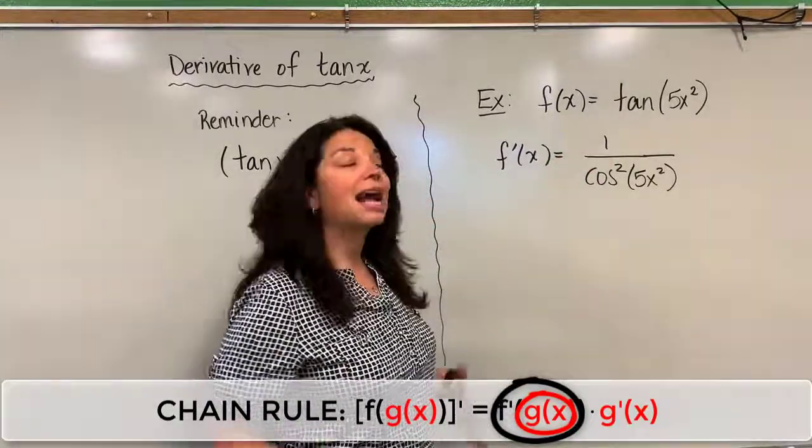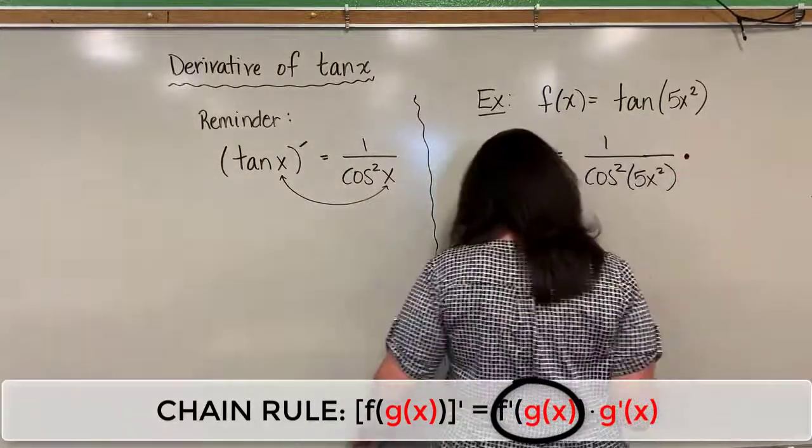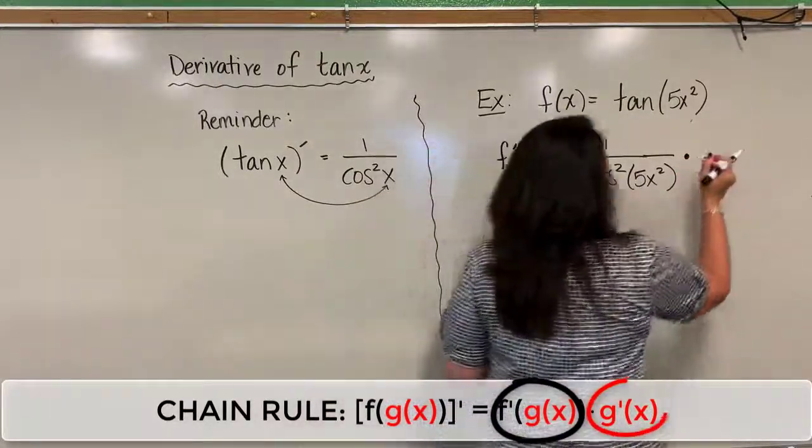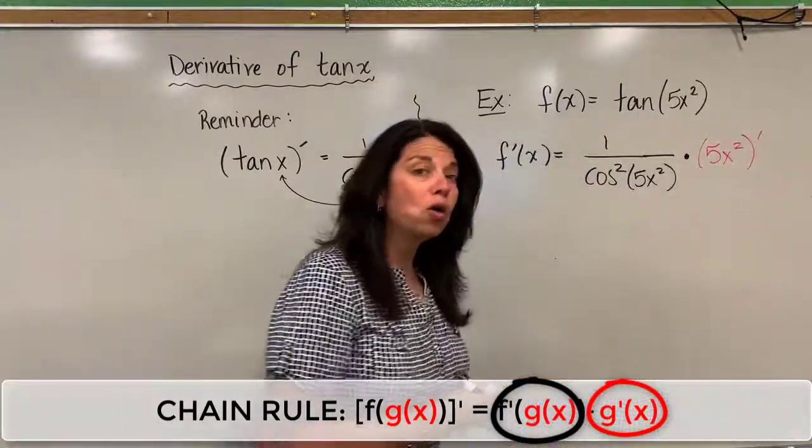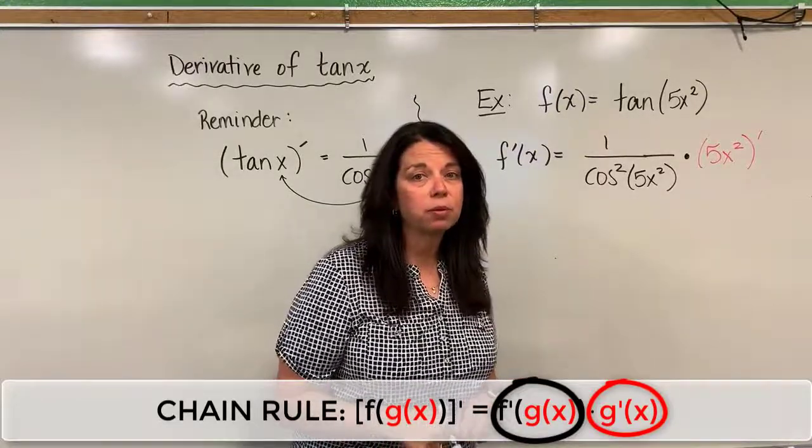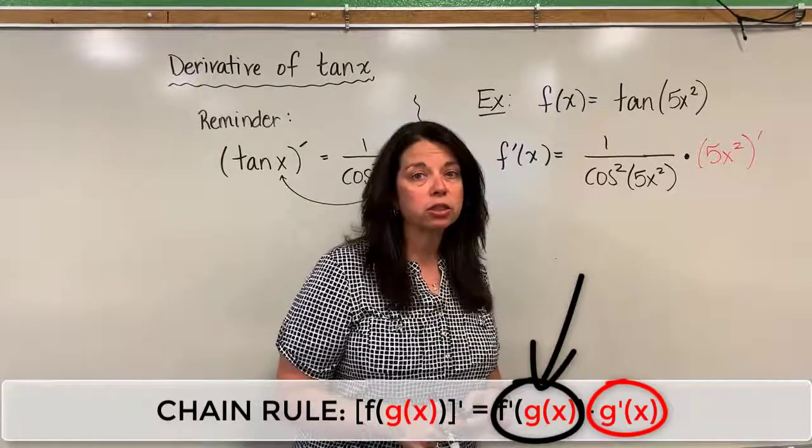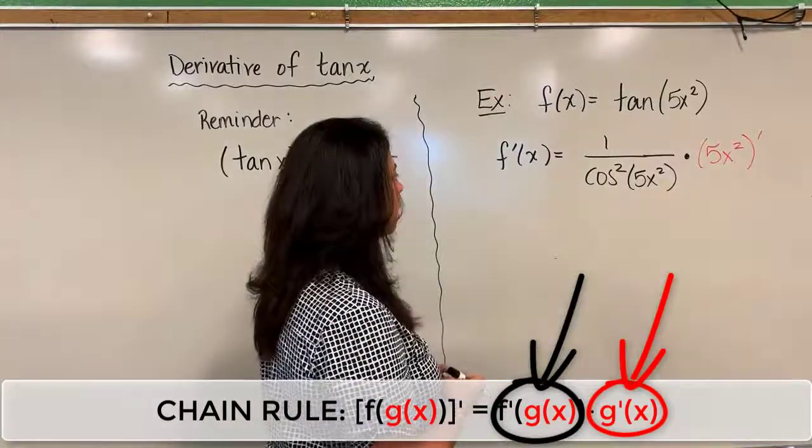Per the chain rule, I now have to take this function and multiply it by the derivative of that 5X squared. Always, when you have a chain rule problem, you're going to have two parts that are multiplied together: first part, the derivative of the outside function; second part, the derivative of the inside function.